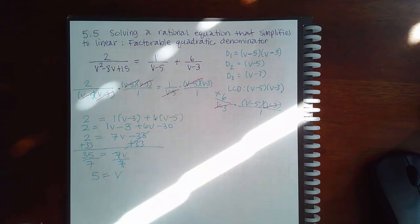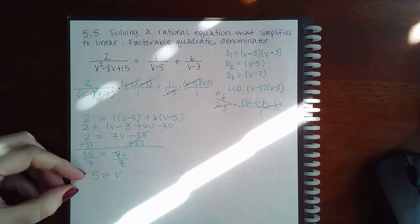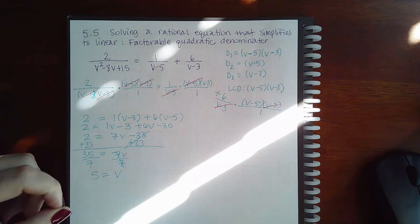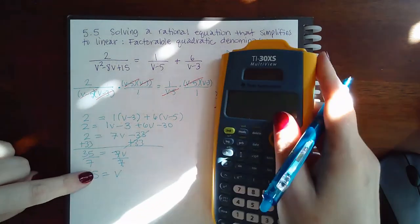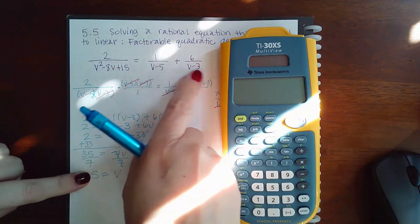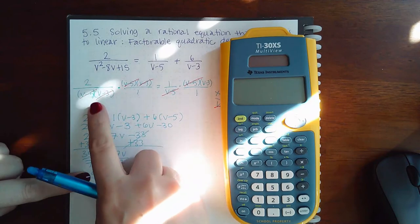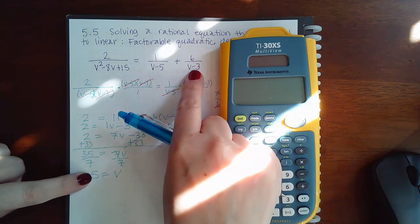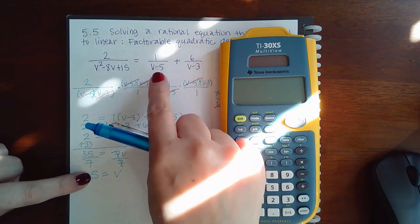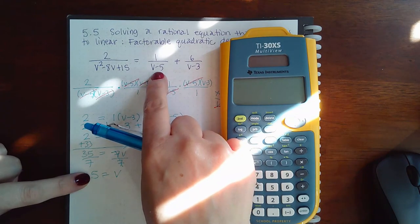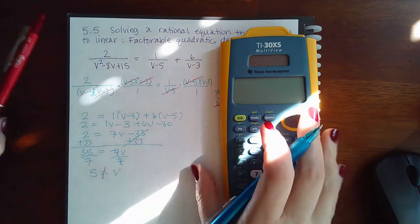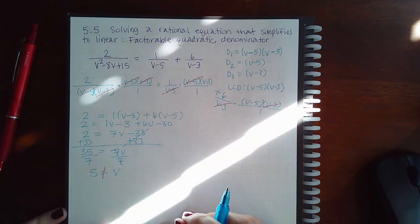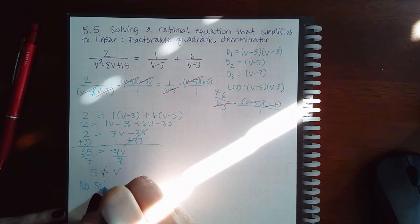We've done everything correct, and this is our potential solution. In order to verify whether it is the actual solution, we need to be sure it doesn't make any of the denominators zero. Testing V equals 5 in V minus 3 gives 2 — not zero, so it's good there. But plugging 5 into V minus 5 gives 5 minus 5, which is 0. That means V equals 5 is not our solution — it's an extraneous solution. Therefore, there is no solution.